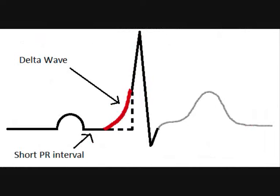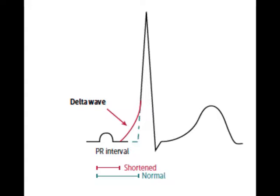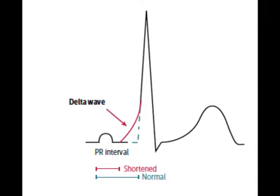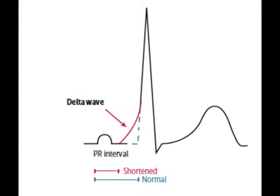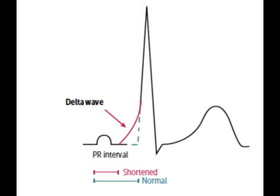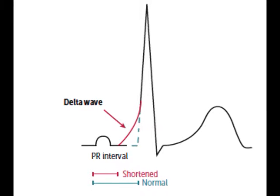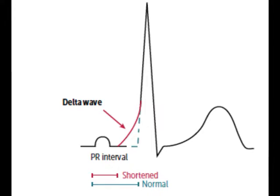Since the ventricles are pre-excited, you can see these characteristic delta waves, which are normally not present in the ECG. If you look at the PR interval, it will be shortened because the ventricles are getting excited before they should. Because of this pre-excitation, the characteristic delta waves appear.